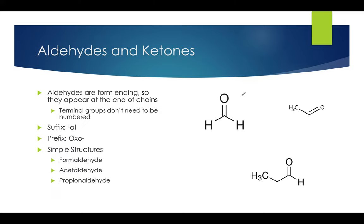Now let's move on to aldehydes and ketones. These molecules are categorized by their carbonyl groups, which are oxygen atoms double bonded to a carbon atom. Aldehydes are chain-ending, so they appear at the end of the carbon chain. Because of this, they usually would not be numbered when being named, as the naming standard would start at the beginning of the aldehyde. Their suffix is '-al' and their prefix is '-oxo.' This prefix is rarely used, but I would still get familiar with it, as it can show up on the exam associated with aldehydes and ketones.